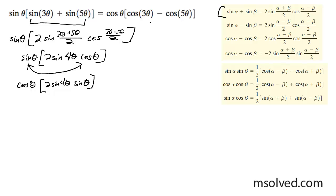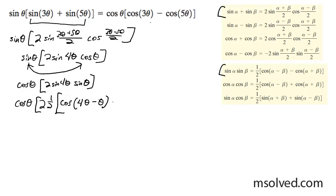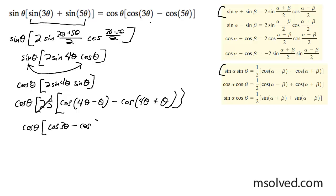Now we're going to do a product-to-sum conversion. We have cosine θ times 2 times one-half, and since we have sine times sine, we use the product-to-sum identity. We get cosine(4θ - θ) minus cosine(θ + θ). The cosine θ terms cancel, and we get cosine 3θ minus cosine 5θ.